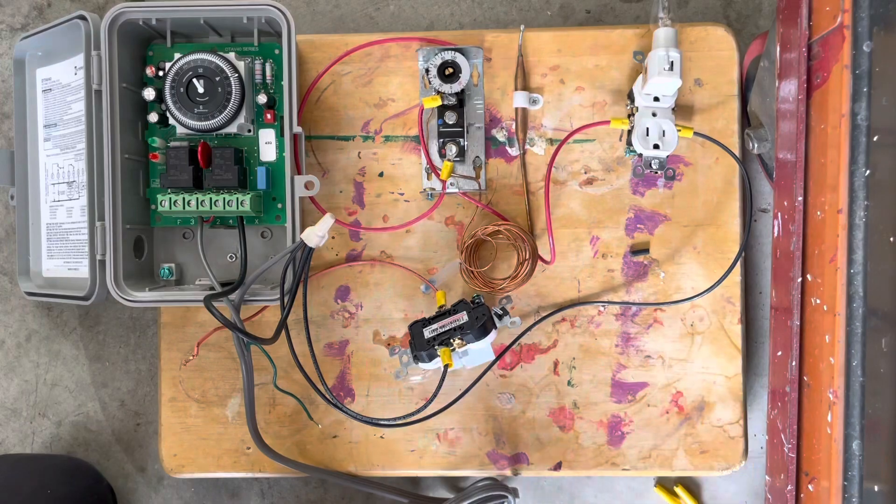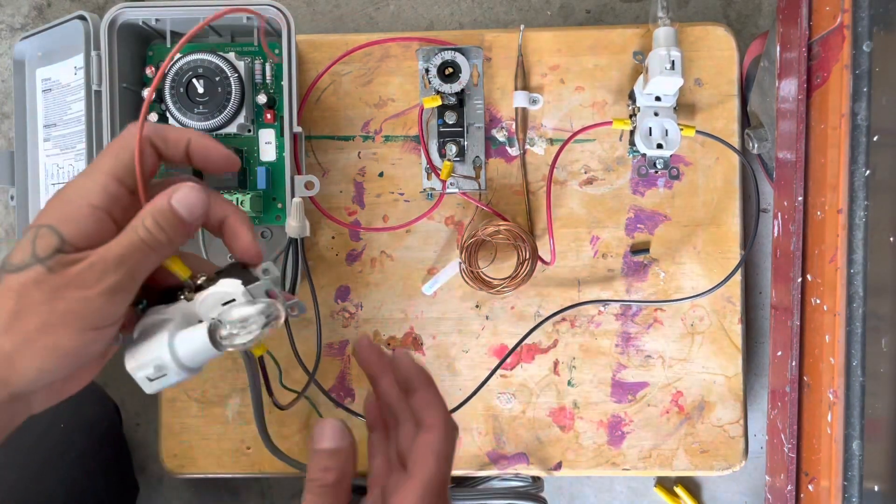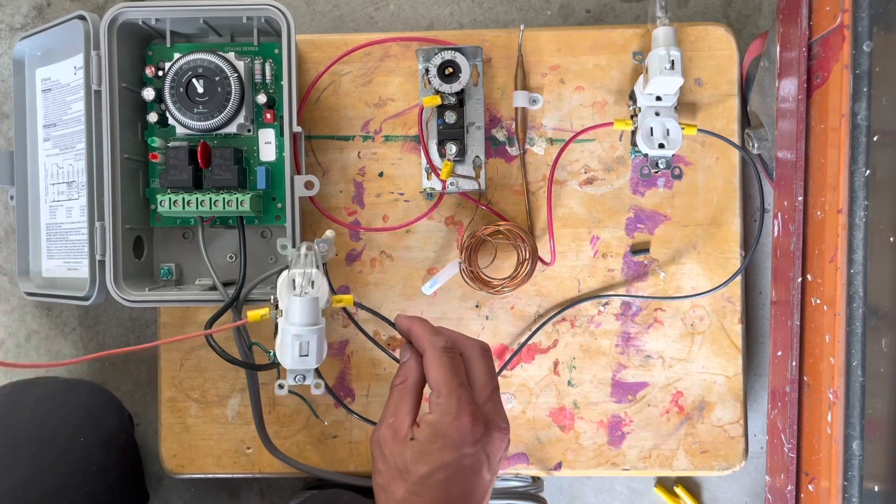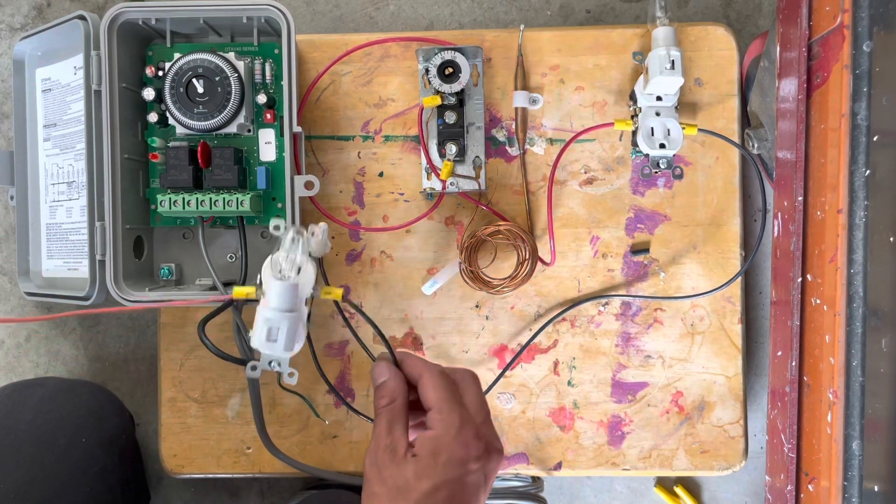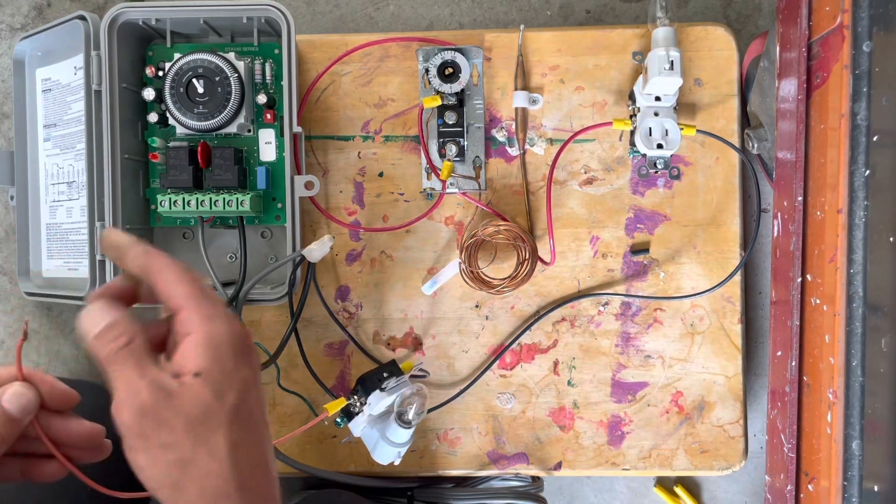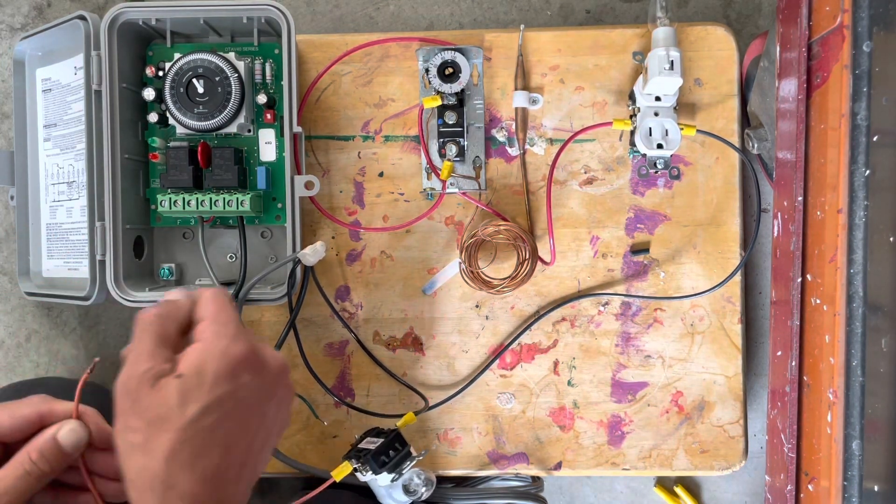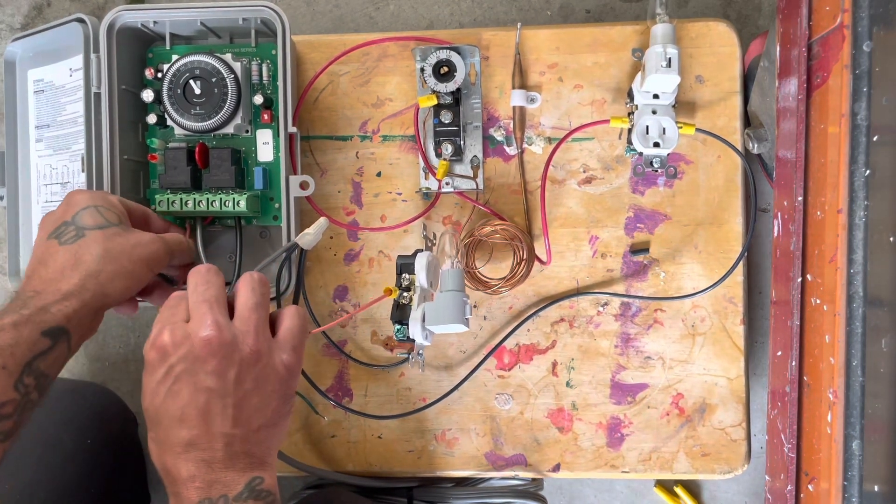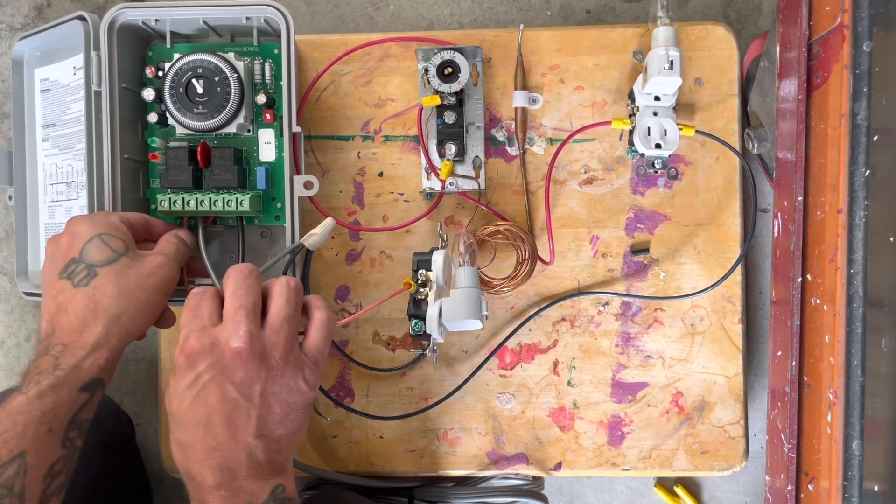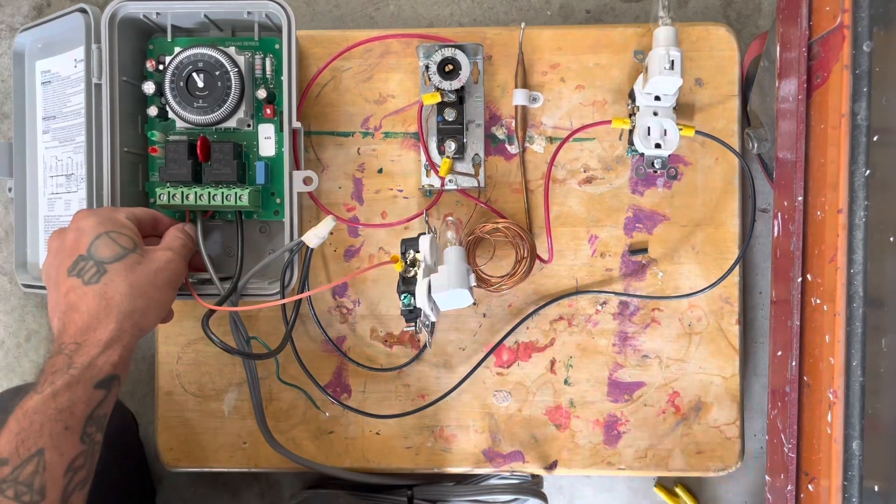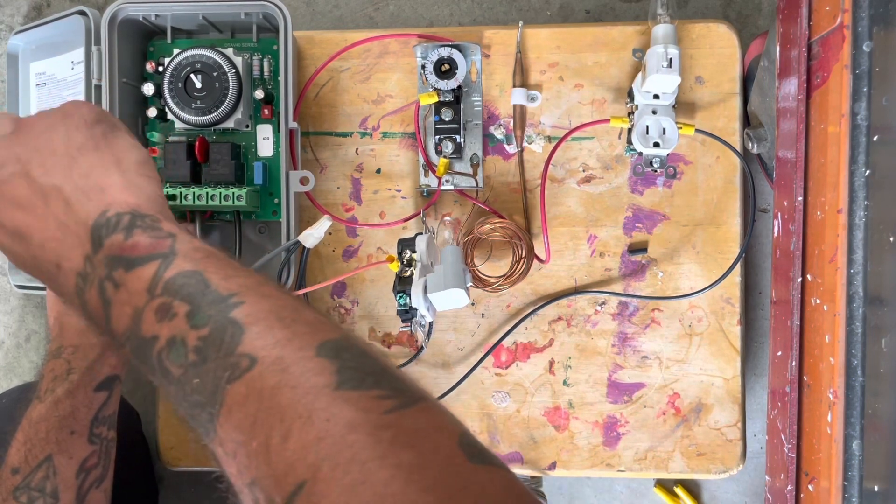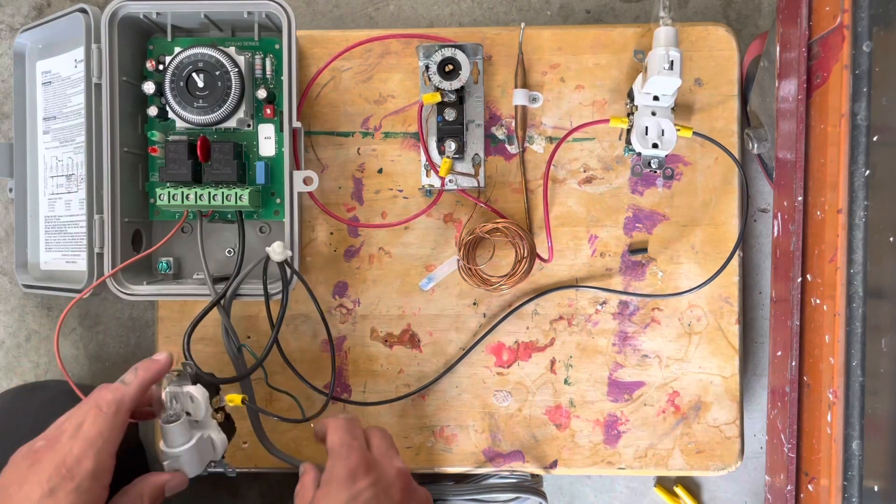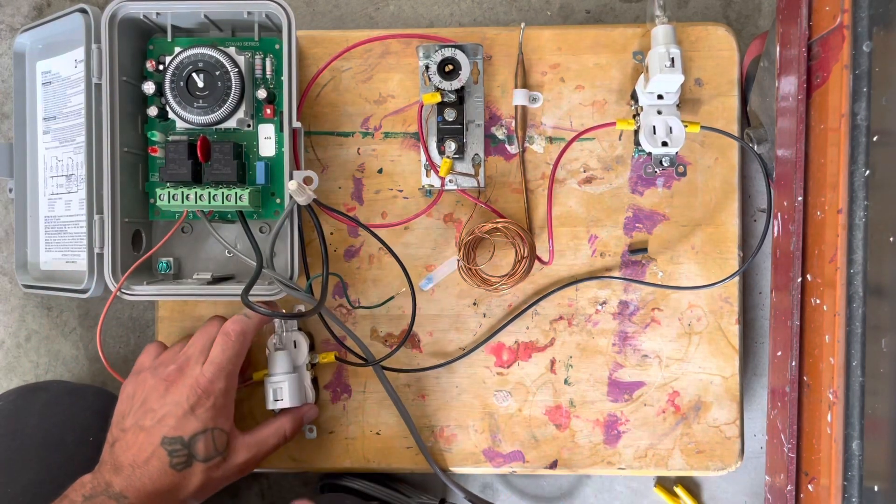Okay, so now we're gonna wire in our heater, heating element. Power is gonna come down from three to energize the coil. So three goes down to our heater.